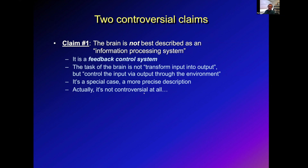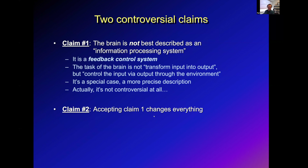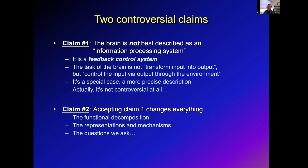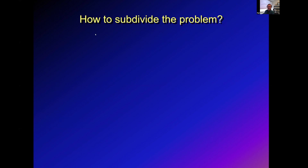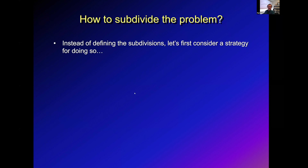I don't think anyone could disagree that the whole point of having a brain is to do something useful that benefits you — so the first claim isn't that controversial. What's more controversial is my second claim: that accepting the first claim changes everything — the functional decomposition, the kinds of representations and mechanisms we might seek in the brain, and the kinds of questions we ask. I think this will be more difficult to defend, and I'll try to do that in the rest of my talk by asking first how to subdivide the problem. Instead of defining what the subdivisions are or using ones inherited from ancient philosophers, let's consider what a strategy for doing so might be.